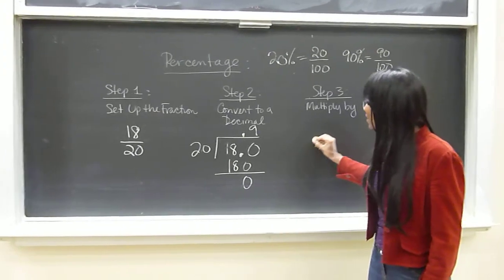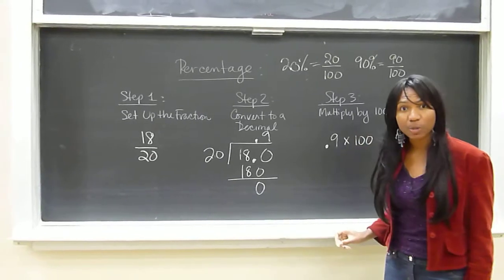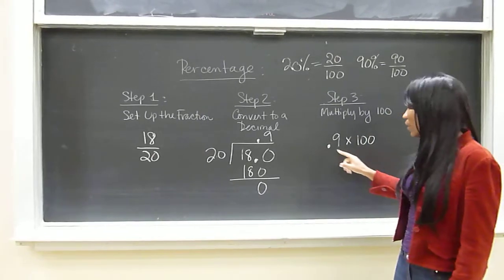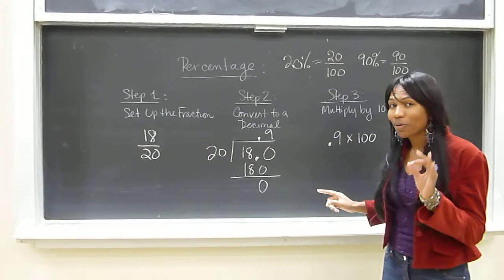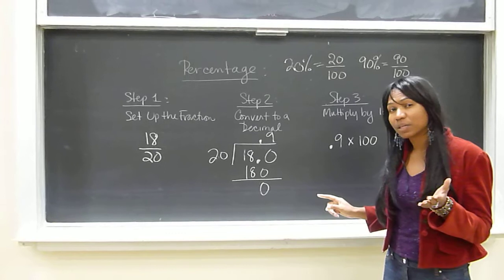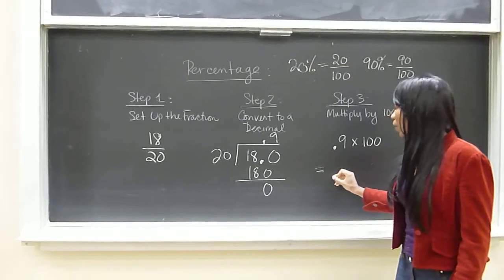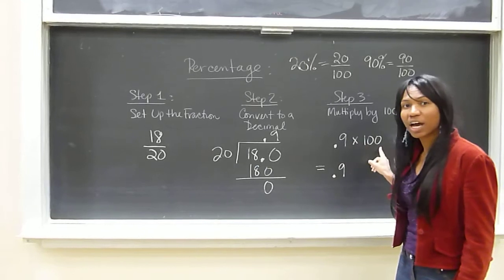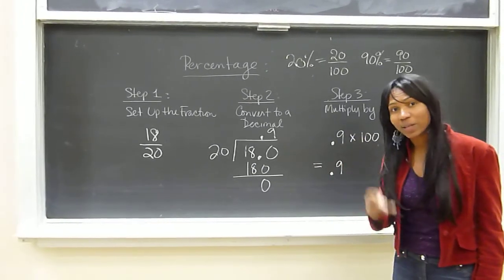So 0.9 times 100 will give us our percentage. Now if you remember math, this part may be a little confusing, but I'm going to make it easy for you. 0.9 when we multiply it by 100 is essentially changing the decimal space two places to the right.